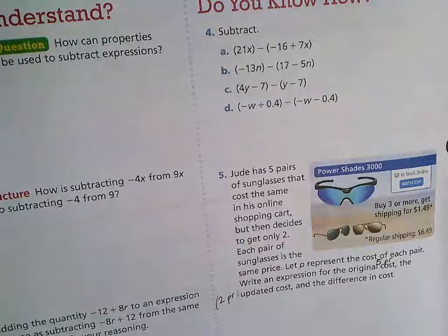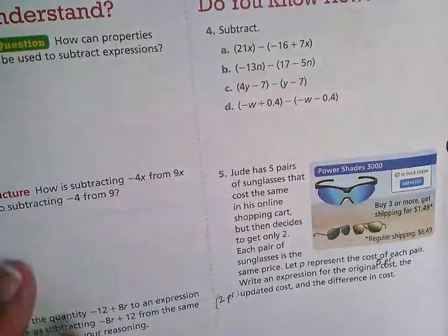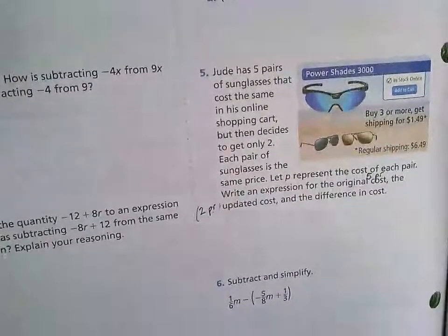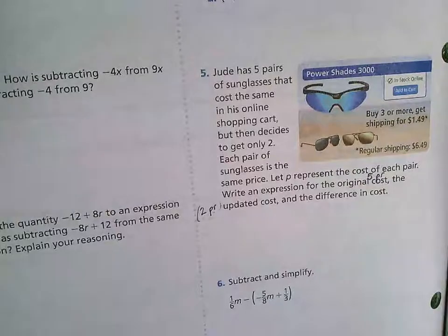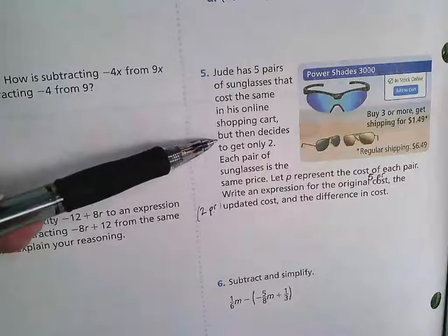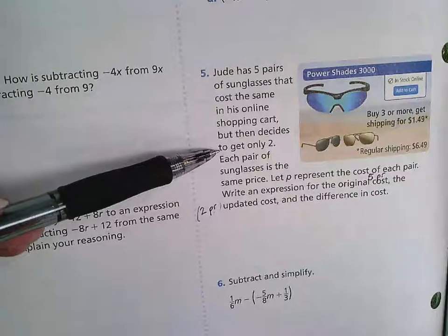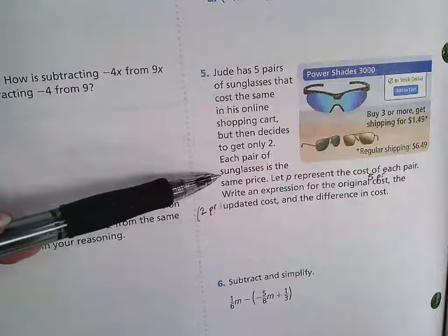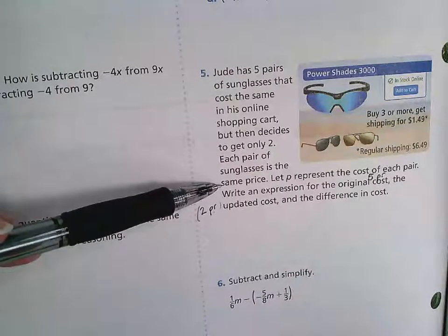Subtracting expressions, number 5. Jude has five pairs of sunglasses that cost the same in his online shopping cart, but then decides to only get two. Each pair of sunglasses is the same price.